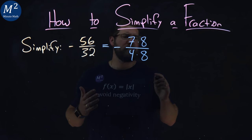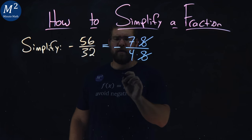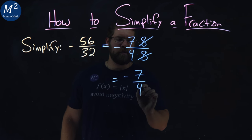By doing this, we can see that the 8s cancel. 8 over 8 will cancel, and we're left with a negative 7 over 4.